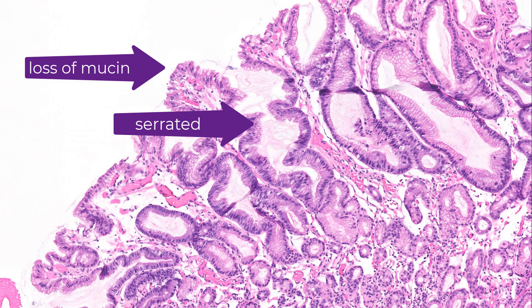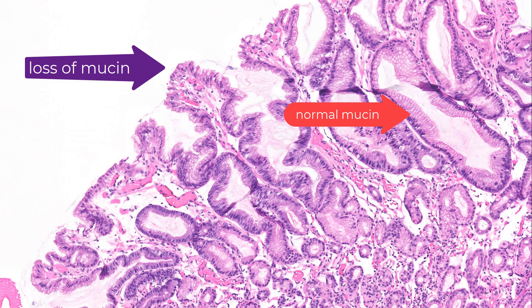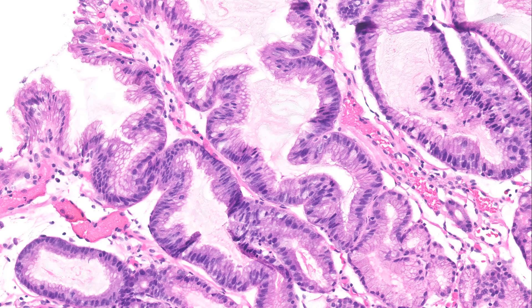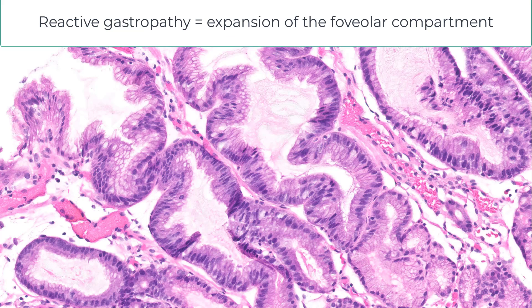Again: serrations, loss of mucin. Up here, that's normal foveolar mucin — that large apical cup. Down here, this is loss of mucin; you've lost that apical cup of mucin. And further down, there is virtually no mucin whatsoever. I don't usually talk mechanism, but this is just too interesting to let go. Basically, what is reactive gastropathy? It is nothing but an expansion of the foveolar compartment.